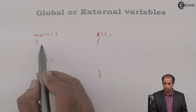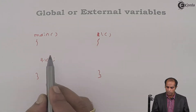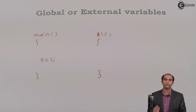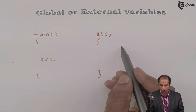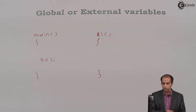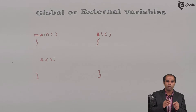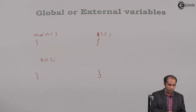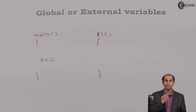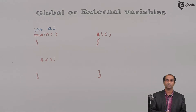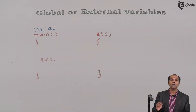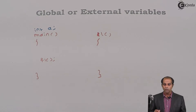If I declare a variable as int a in main, this a can be used only in main but can't be used in f1. If I declare a in f1, it can be used only in f1 but can't be used in main. A variable declared within a function will not be used across multiple functions. So why don't we declare the variable such that it will be accessed across multiple functions? I'll define int a above the main function — now this a is said to be a global variable.